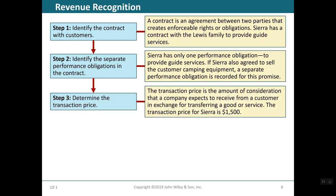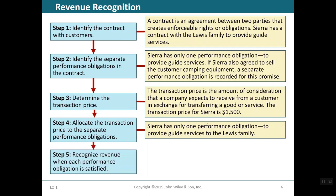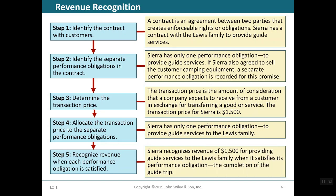Third, determine the transaction price — the amount of consideration a company expects to receive in exchange for transferring goods and services. For Sierra, the transaction price is $1,500. Fourth, allocate the transaction price to the separate performance obligations; Sierra has only one obligation to provide guide services to the Lewis family. Fifth, recognize revenue when each performance obligation is satisfied — Sierra recognizes $1,500 revenue for providing guide services when it completes the guided trips.